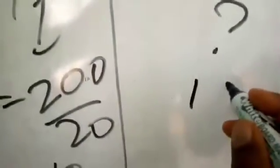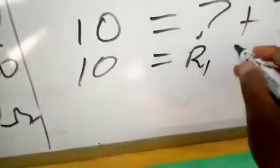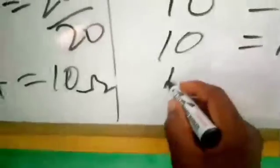So now that we have the 10 ohms, you put the 10 here as the Rt, and then the R1 unknown, and then the R2 as 7. So you make the R1 the subject. You bring it out here.